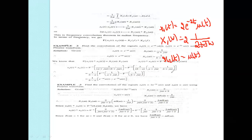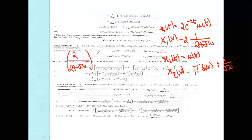The second signal x2(t) = u(t), so X2(ω) = the Fourier transform of u(t), which is π·δ(ω) + 1/(jω). Now we apply the convolution theorem by multiplying the two Fourier transforms: X1(ω) × X2(ω) = [2/(2 + jω)] × [π·δ(ω) + 1/(jω)].